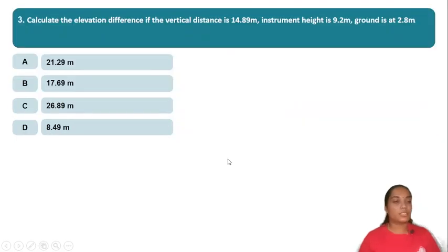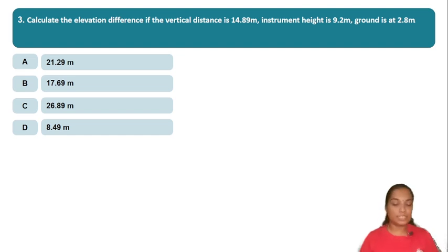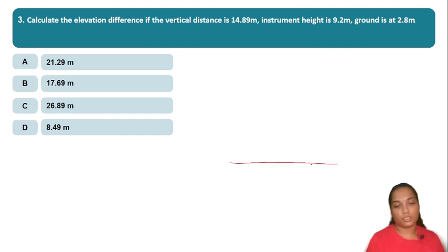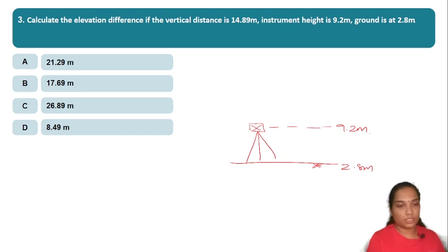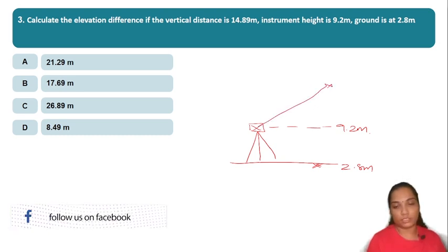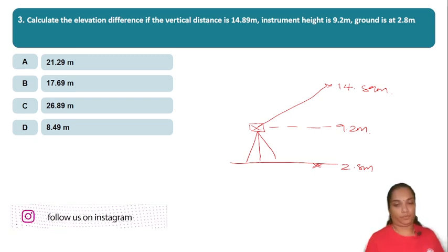Calculate the elevation difference if the vertical distance is 14.89 meters, instrument height is 9.2 meters, and ground RL is 2.8 meters. The object is sighted under the instrument. Using these values, you can find the elevation difference.